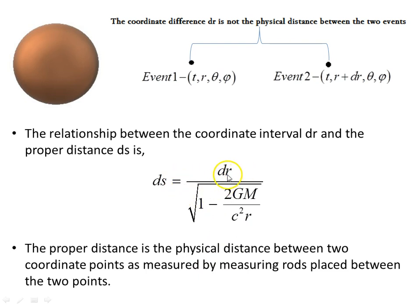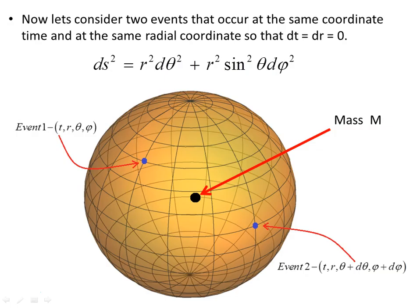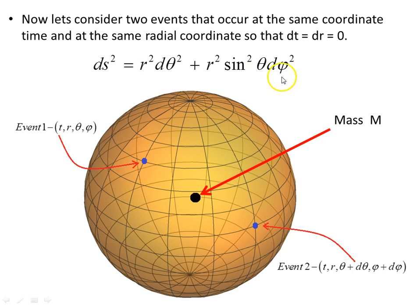The proper distance is not the coordinate r. Now let's consider two events that occur at the same coordinate time and at the same radial coordinate, so that dt and dr are zero. Our spacetime interval becomes just the angular part.